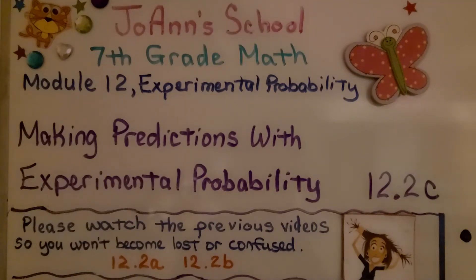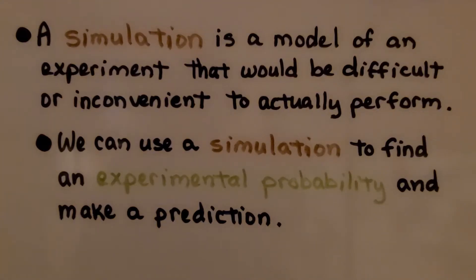We're now at lesson 12.2c, making predictions with experimental probability. A simulation is a model of an experiment that would be difficult or inconvenient to actually perform. We can use a simulation to find an experimental probability and make a prediction.